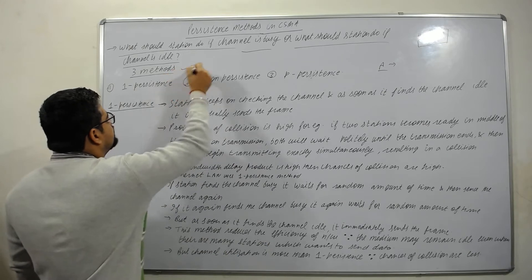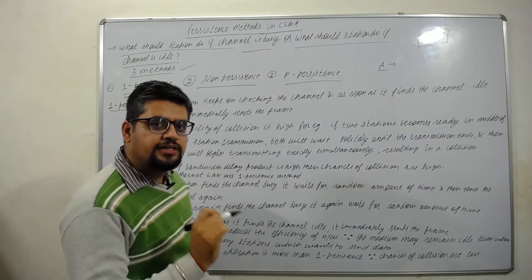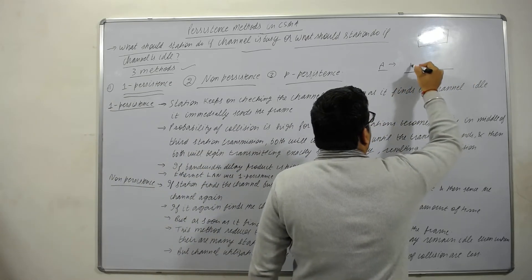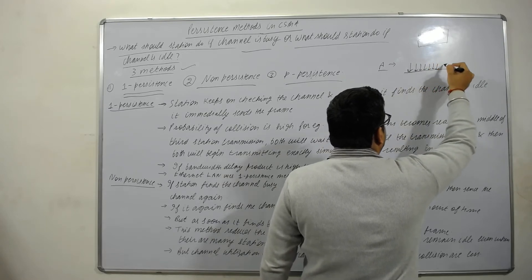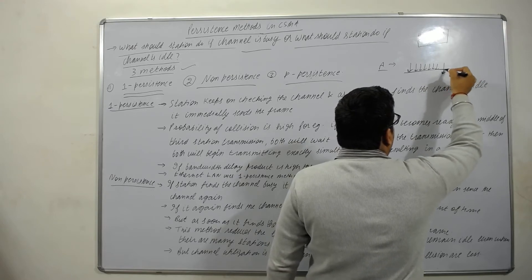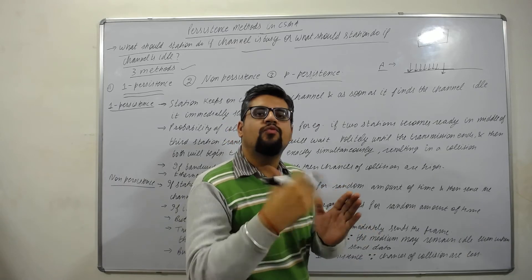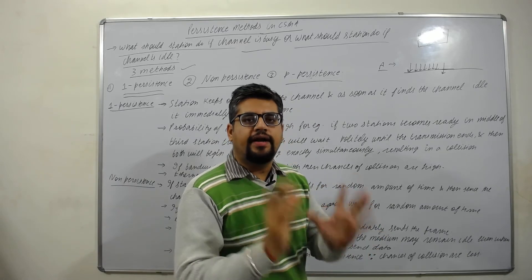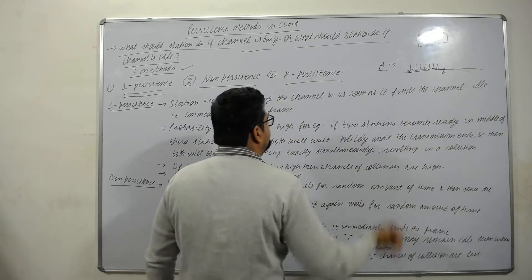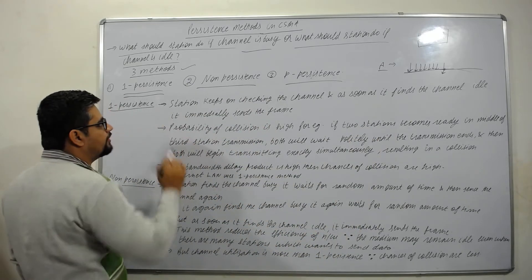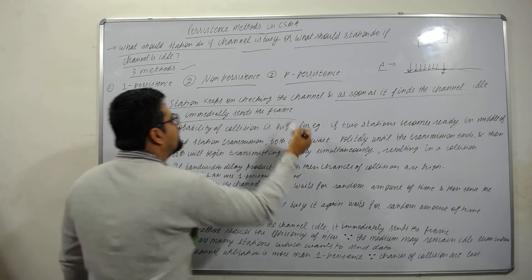We have three types: one-persistence, non-persistence, and p-persistence. One-persistence means that the station will keep checking the channel, and as soon as it finds the channel idle, it will immediately send the frame.